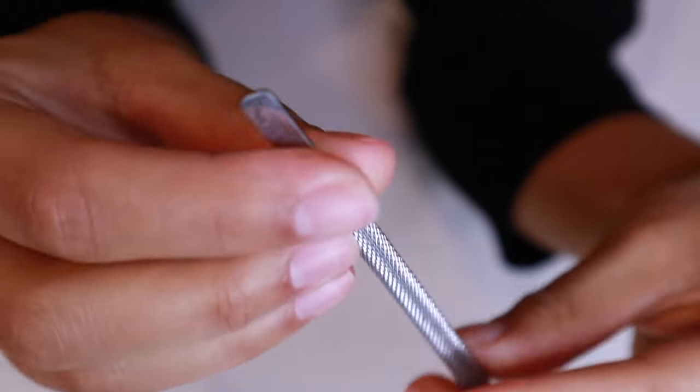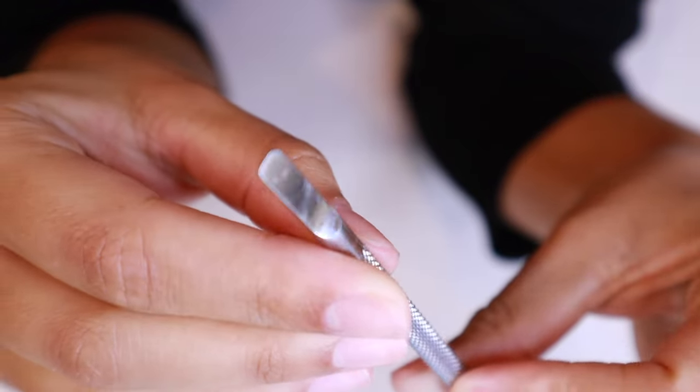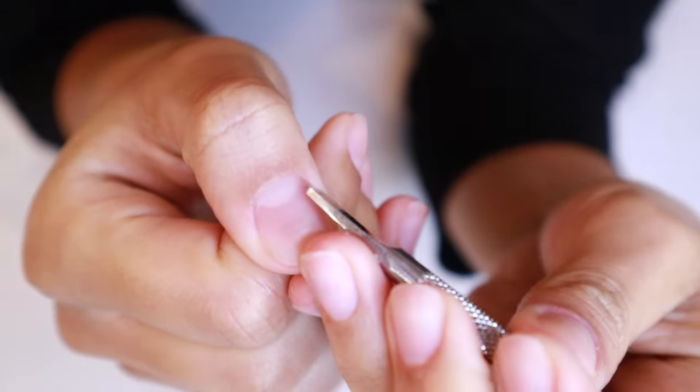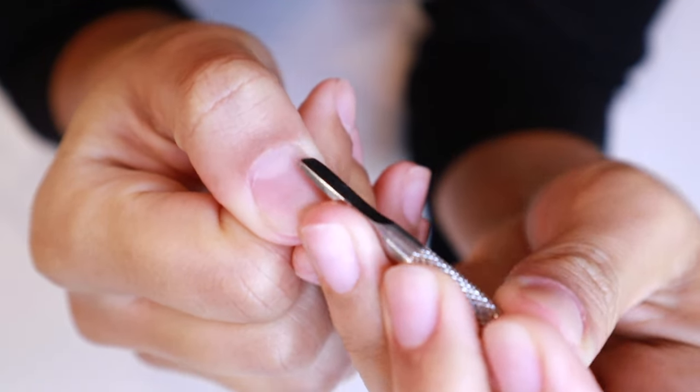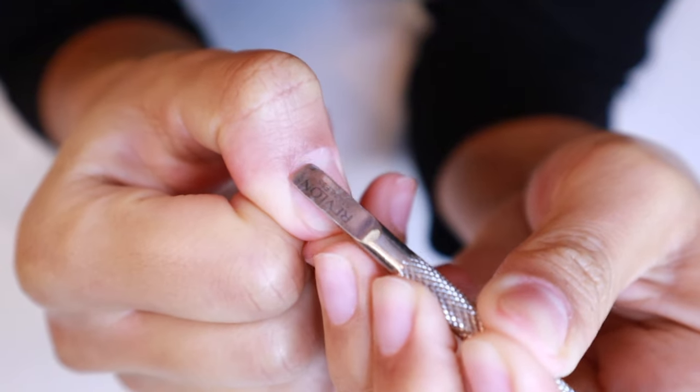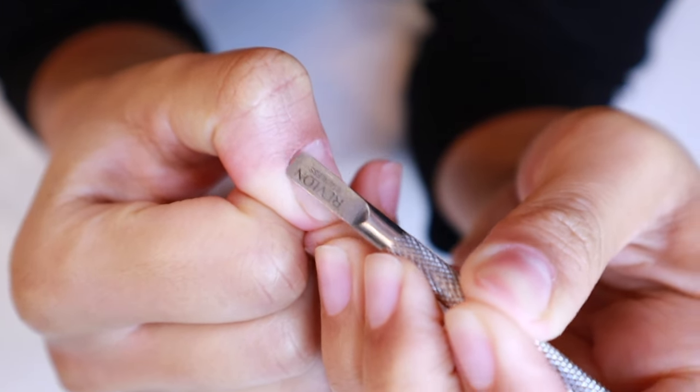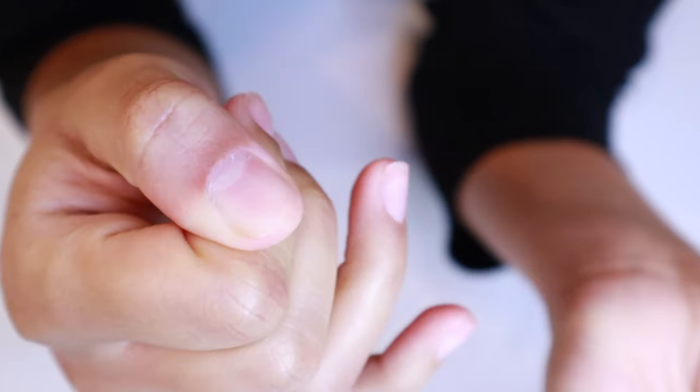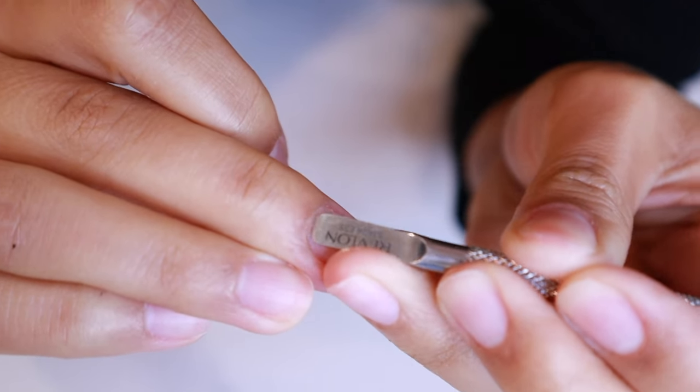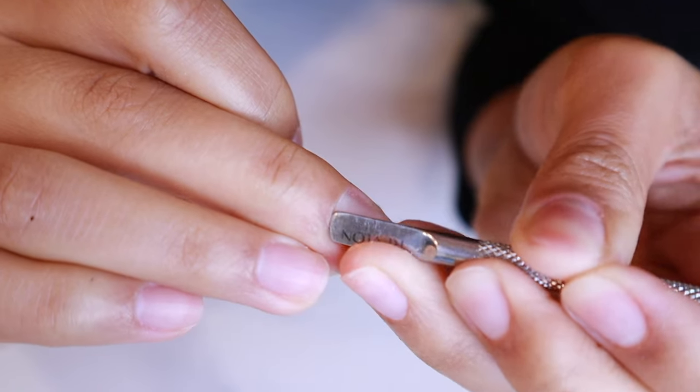Now we're going to move on to cuticle care, and I love to use this tool because I've been using it for years. But you don't really need a tool like this—you can also use an orange stick. I've been using this motion once or twice a week to nudge my cuticles back, and this has helped keep my nail beds looking a little bit cleaner and more neat.